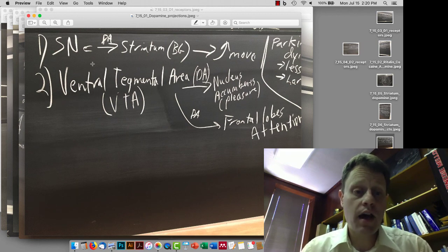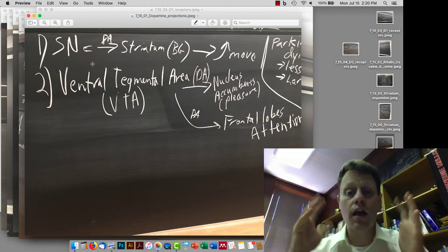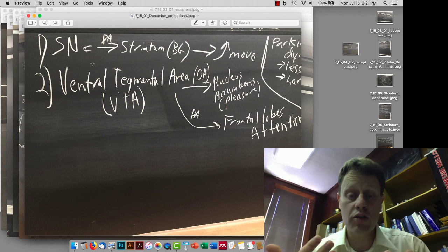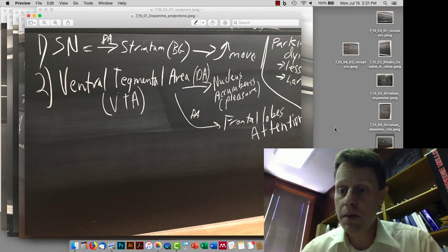The second area that produces dopamine is the ventral tegmental area, and it makes two projections. One is that a lot of its axons go to the nucleus accumbens. This is an area in the brain where dopamine release promotes feelings of pleasure. And then the other is to the frontal lobes, where dopamine enhances attention. When we talk about ADHD, that's something that's going to come up quite a bit.